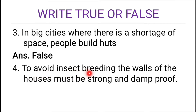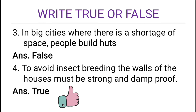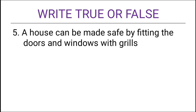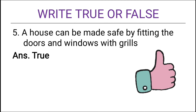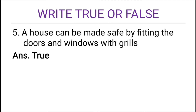Fourth true/false: to avoid insect breeding, the walls of the houses must be strong and damp proof. The answer is true. To avoid insect breeding, the walls of the houses must definitely be strong and damp proof. Fifth: a house can be made safe by fitting the doors and windows with grills. The answer is true — it can be made safe by fitting doors and windows with grills.